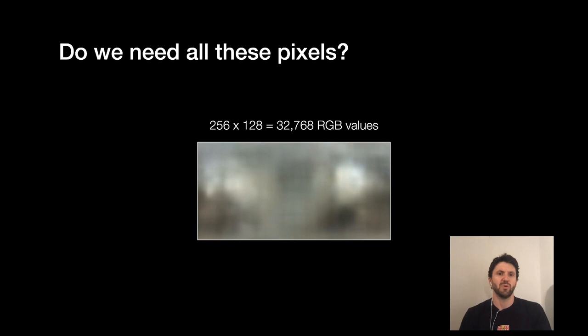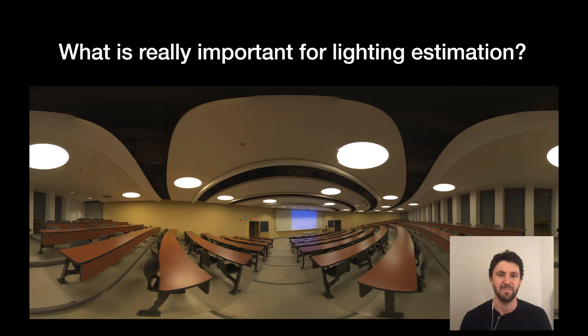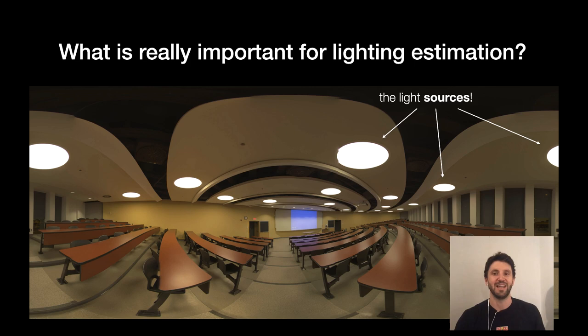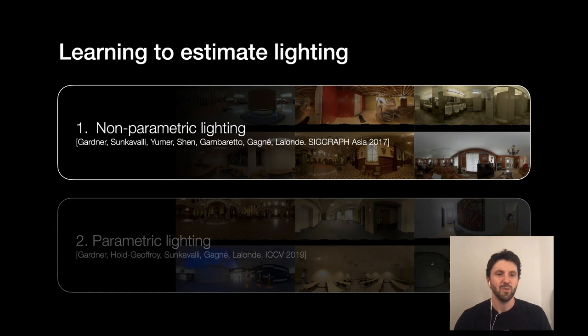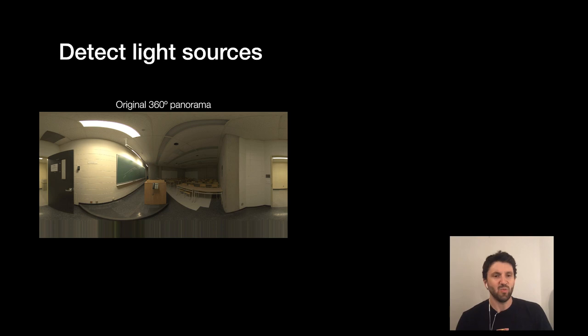All right, so the question we are asking at the end of that project was, well, okay, so we're regressing this whole environment map, this whole latitude of 360 degree panorama that contains 32,000 pixels, essentially. So do we need all of these pixels, right? So what is really, really important for lighting estimation? If I give you this pano, for example, are all the pixels equally important for lighting an object? Clearly, the answer is no, right? There's a few pixels that are a lot more important than others. What are those pixels? The ones that belong, that correspond to the light sources, of course, right? So in the second part of the talk, and that one's going to be a little bit quicker, we're going to talk about parametric lighting estimation.